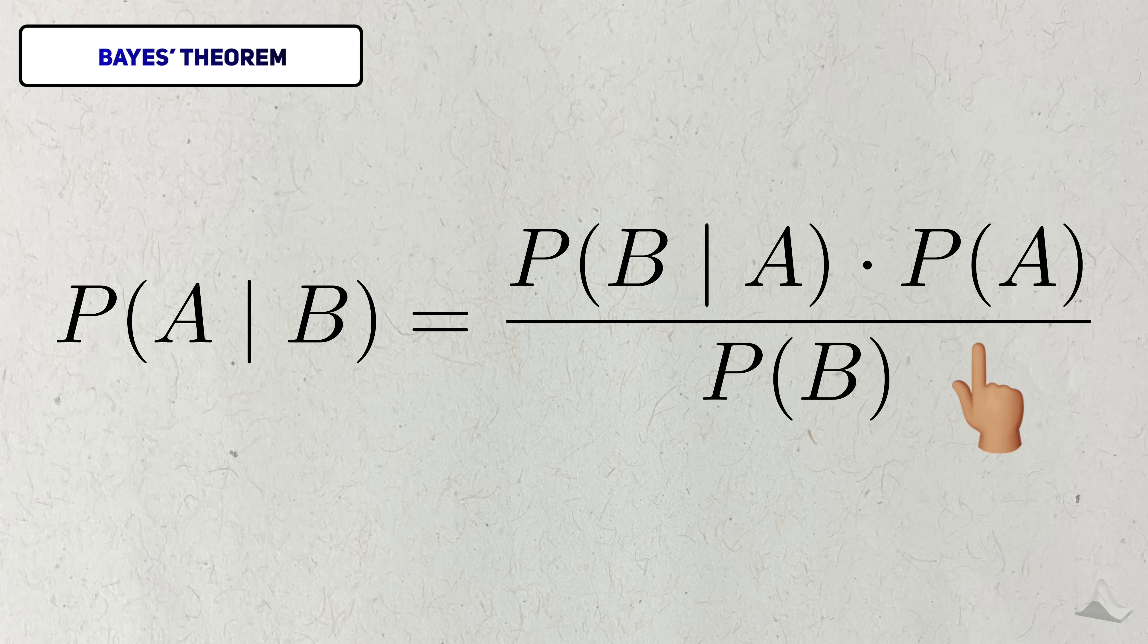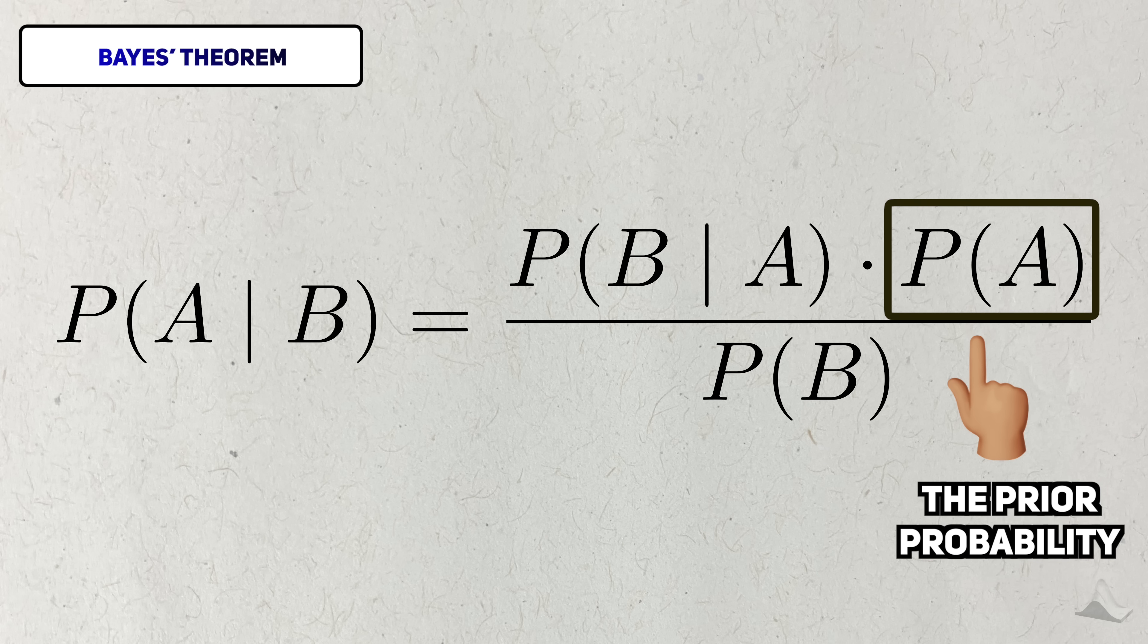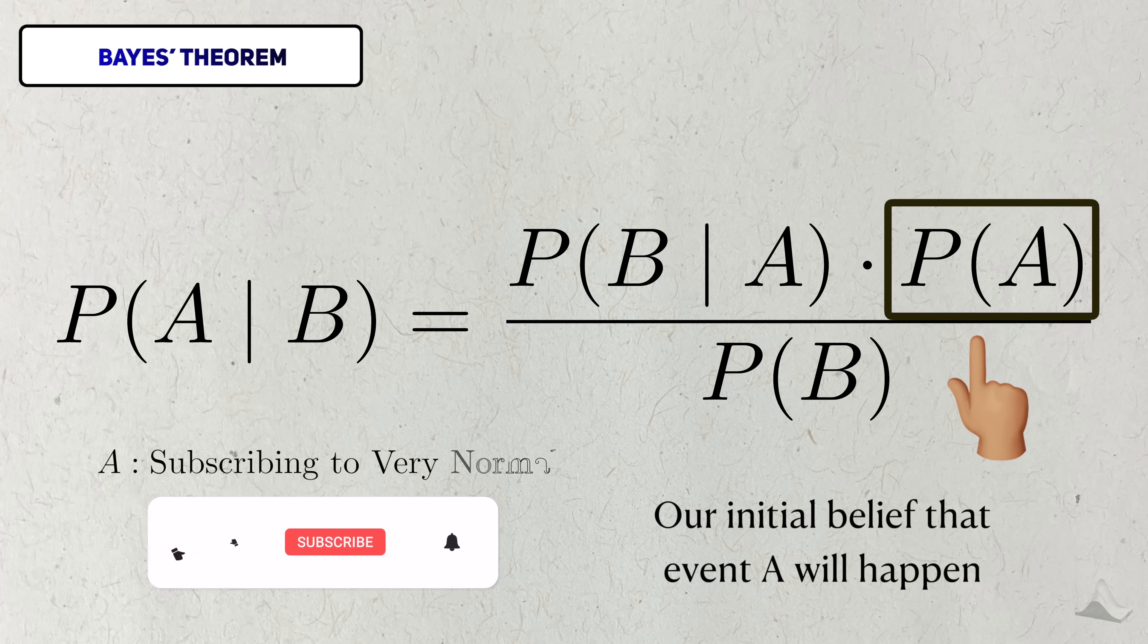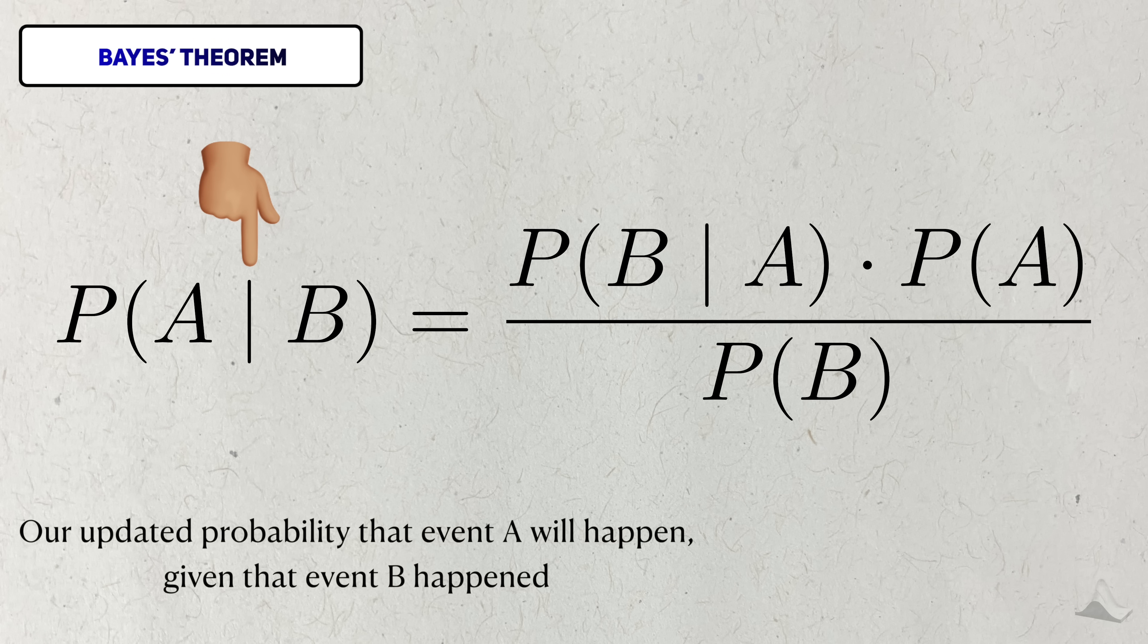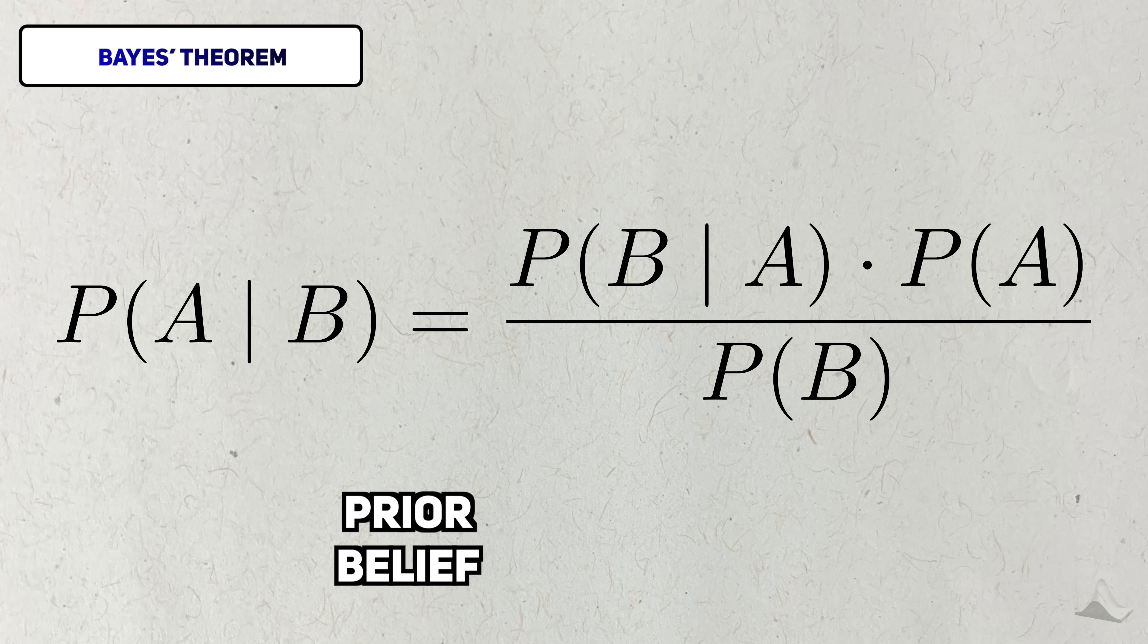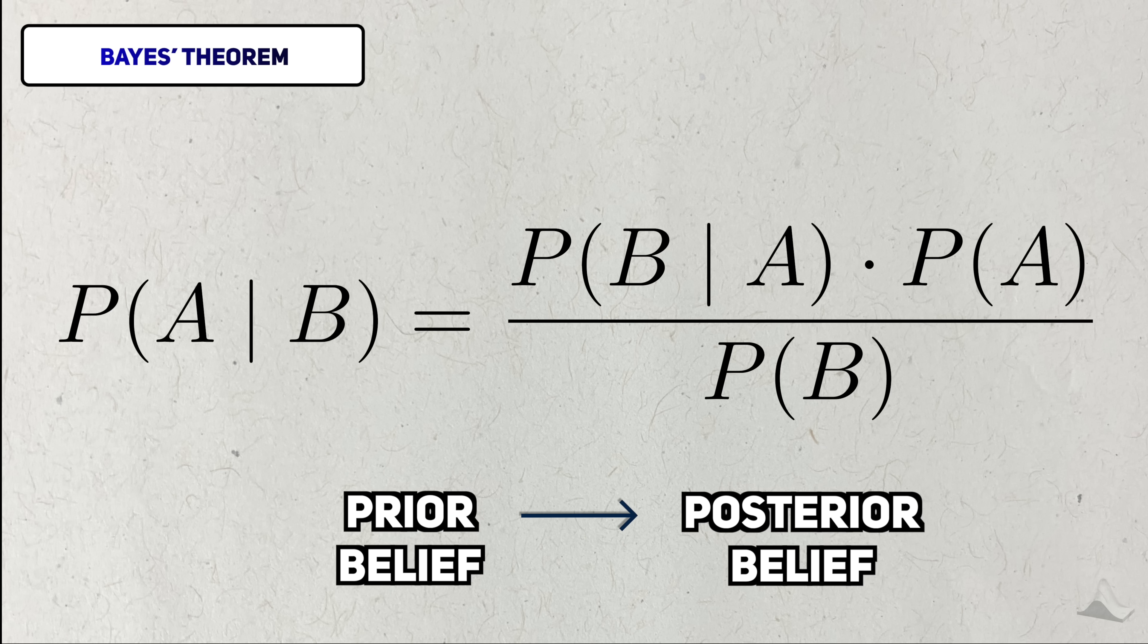The key part here is here and here. We call this part of Bayes' theorem, the prior probability. You can think of this event as your prior knowledge that an event will happen. It could be something as simple as you subscribing to this channel, which you should, by the way. And this is an updated probability that A will happen given that we saw B happen.